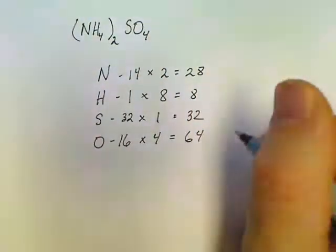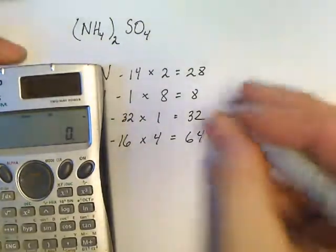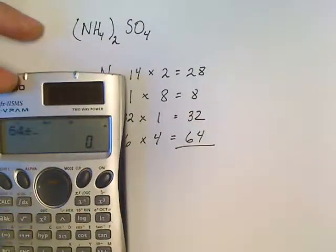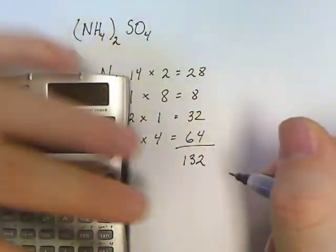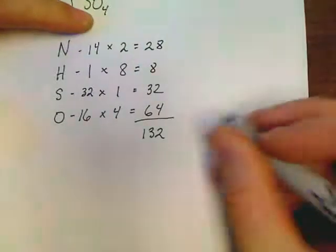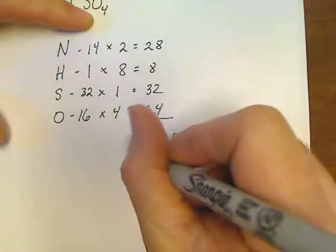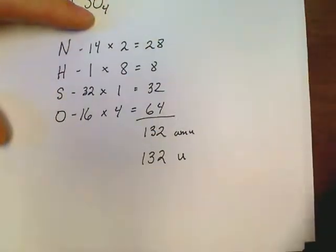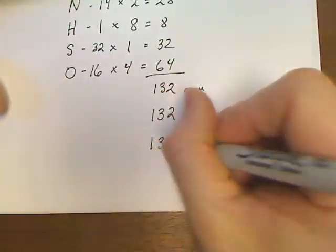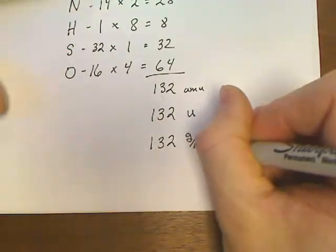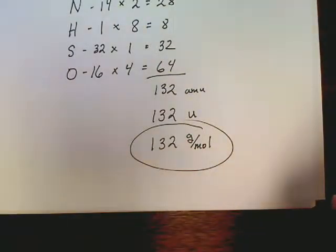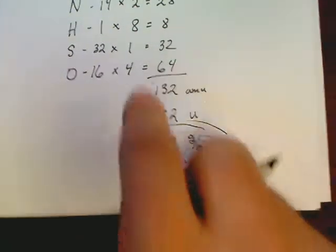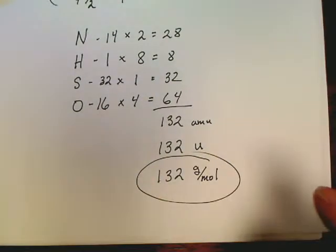Now we go through and just add up those totals and see what we get: 64 plus 32 plus 8 plus 28 means my total is 132. In terms of a unit, it depends on your teacher. You may get to write amu for a unit. They may want you to write 132 u. They may want you to write 132 grams per mole, which in reality this is the one that's so important because you can't do anything with moles if you cannot do this.